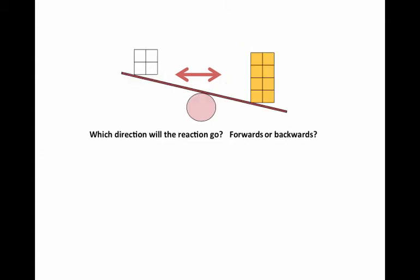Let's look at a second example here with an unbalanced reaction. You decide which way would the reaction need to go forwards or backwards to restore equilibrium.